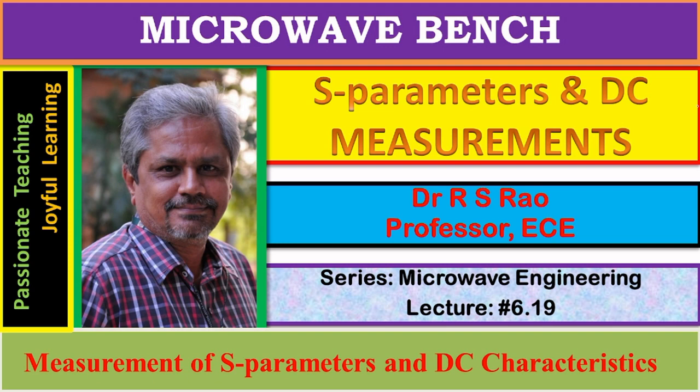A Microwave Bench is a waveguide run with a source at one end and a terminating load at the other end. In between the source and load there exist several components like isolator, attenuator, wave meter, standing wave detector, and possibly more depending upon the quantity of measurement in the waveguide run.